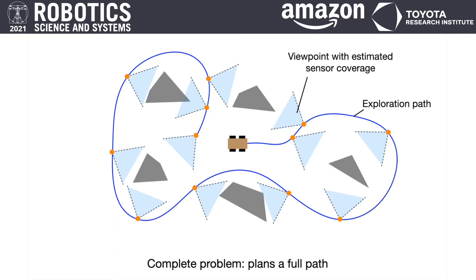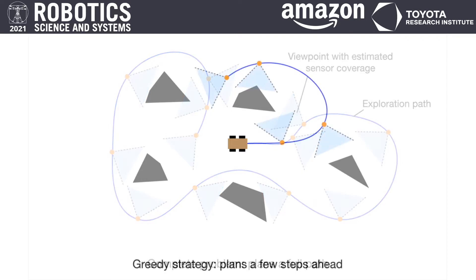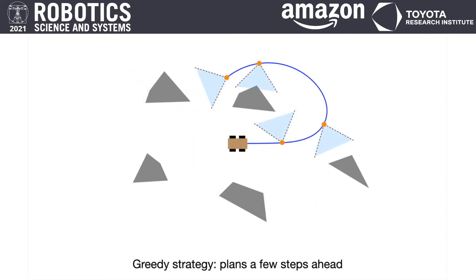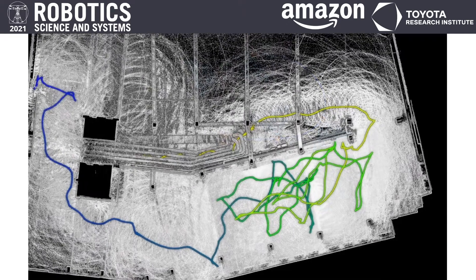Second, it needs to efficiently search the representation for the paths. The existing approaches we have seen are not quite efficient in either task. Many of them are based on greedy strategies. Instead of optimizing the full path, they optimize the marginal coverage for a few steps ahead.